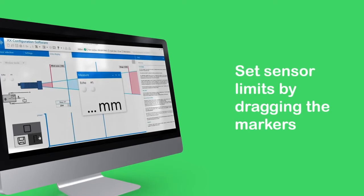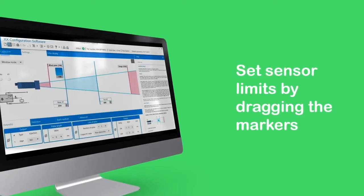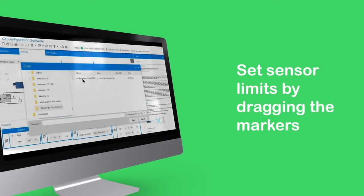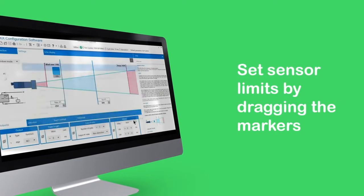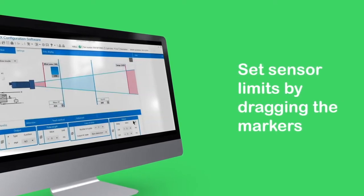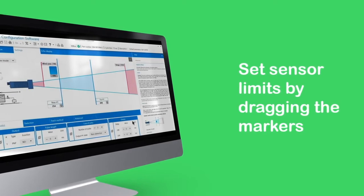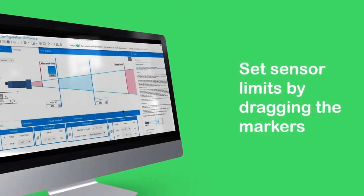If you wish to configure another sensor with the same settings, simply save the settings to a file. Connect another sensor, then download the file to the sensor. Simply easy.